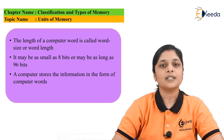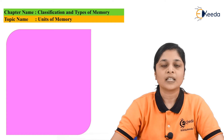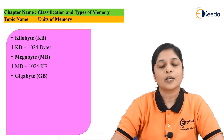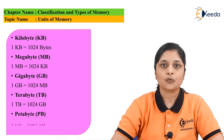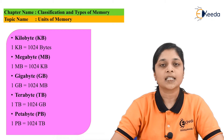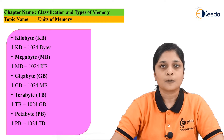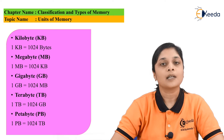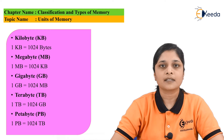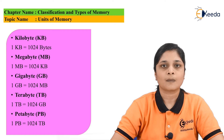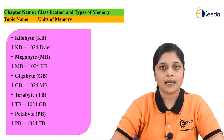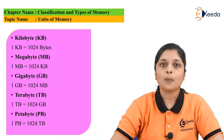Now some points we will discuss related to units of a memory. If there is a requirement of storage of more information, then again we have units for the memory. These units are kilobytes, megabytes, gigabytes, terabytes, exabytes, and petabytes. You can see inside the slide: one kilobyte equals 1024 bytes.